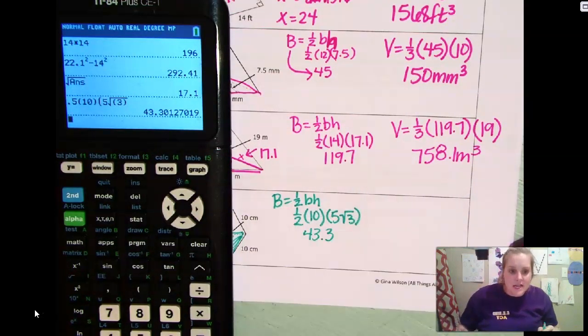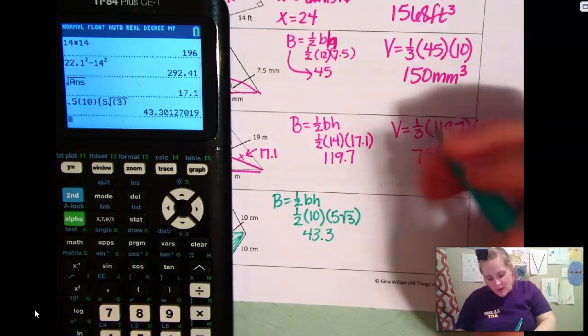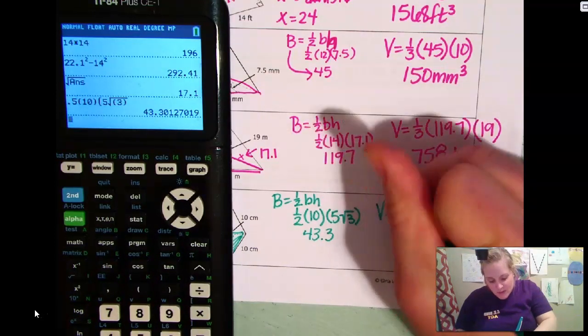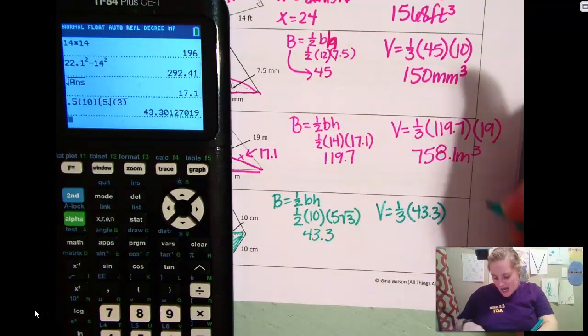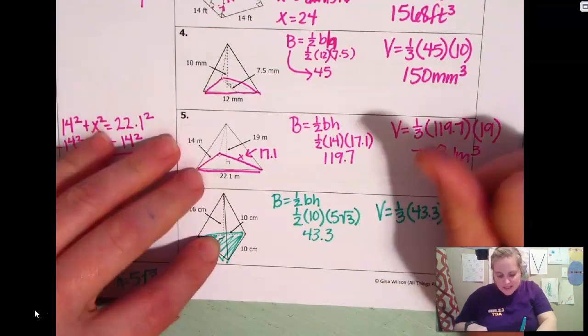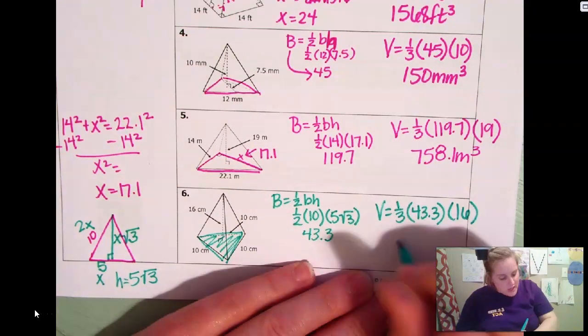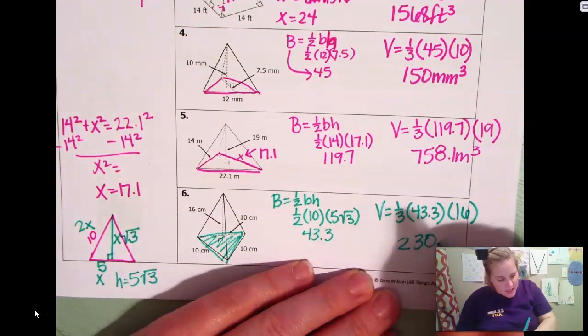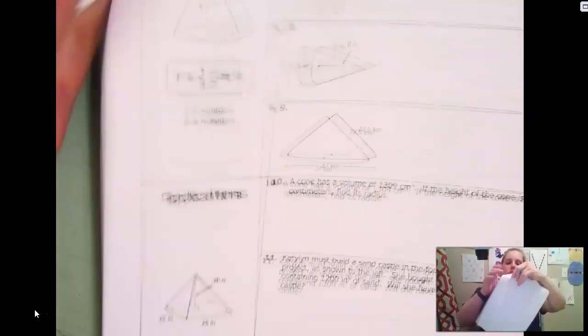And I use 30, 60, 90. But again, you could have used the Pythagorean theorem if you wanted to. It's totally up to you, whatever you want to do. Okay. Volume is going to be one third, 43.3. And then the height they give us is 16. Plug that in your calculator. 230.93 centimeters cubed. Okay? All right.